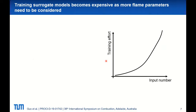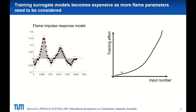Although this sounds attractive, building surrogate models is not necessarily an easy task. This is because of the so-called curse of dimensionality, which states that the required number of training samples grows exponentially as we have more input parameters. In practice, flame models usually have many parameters.